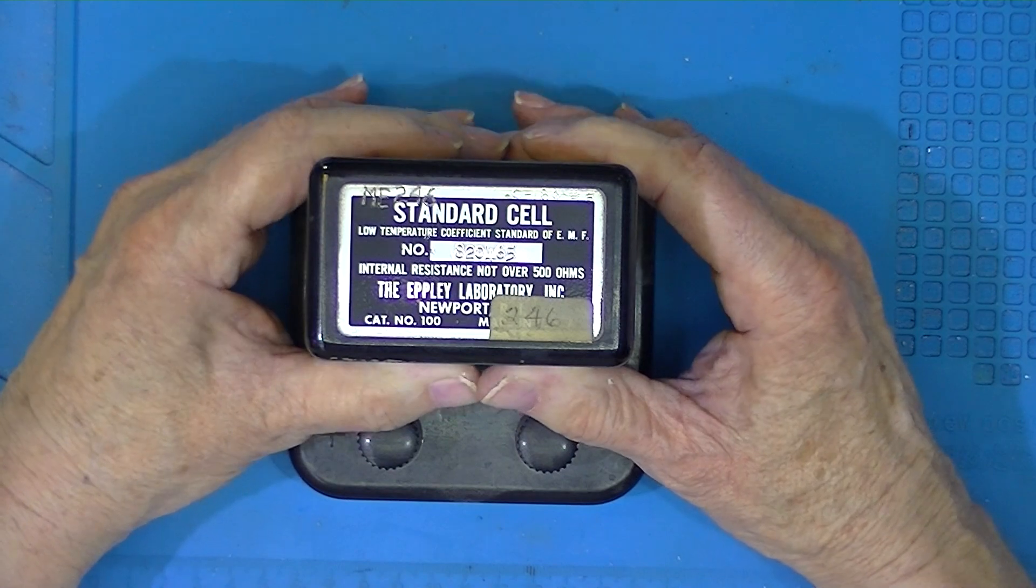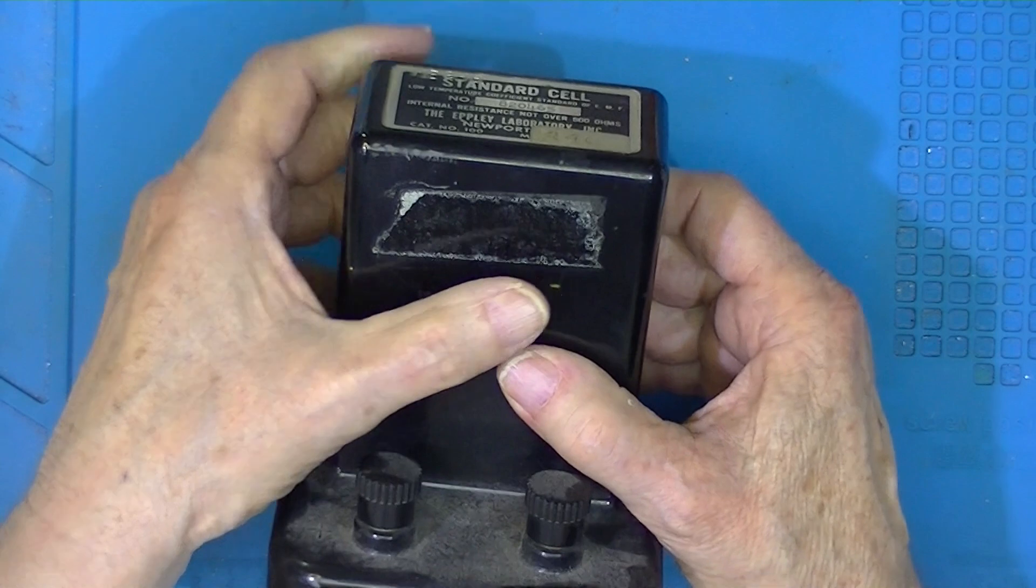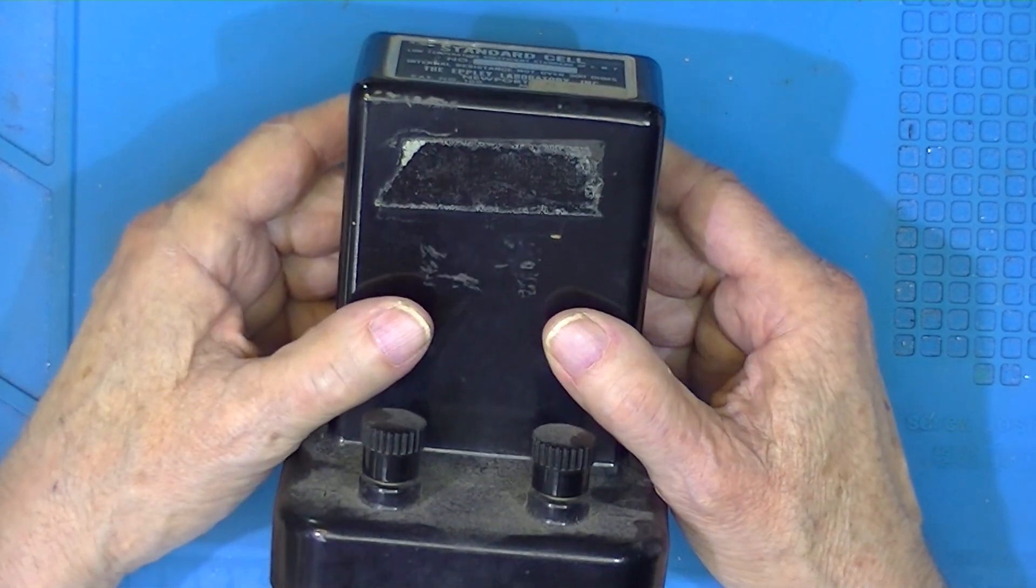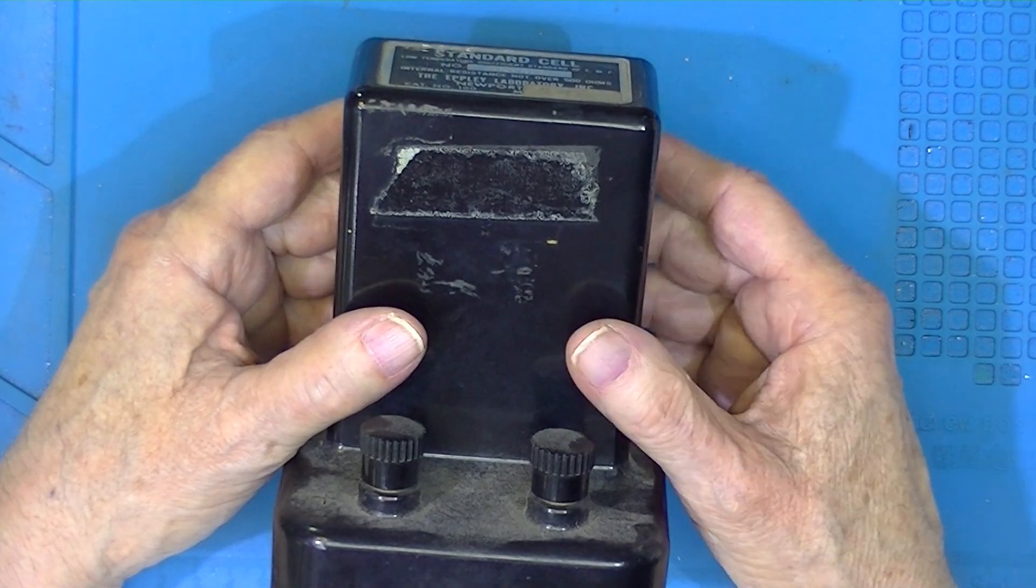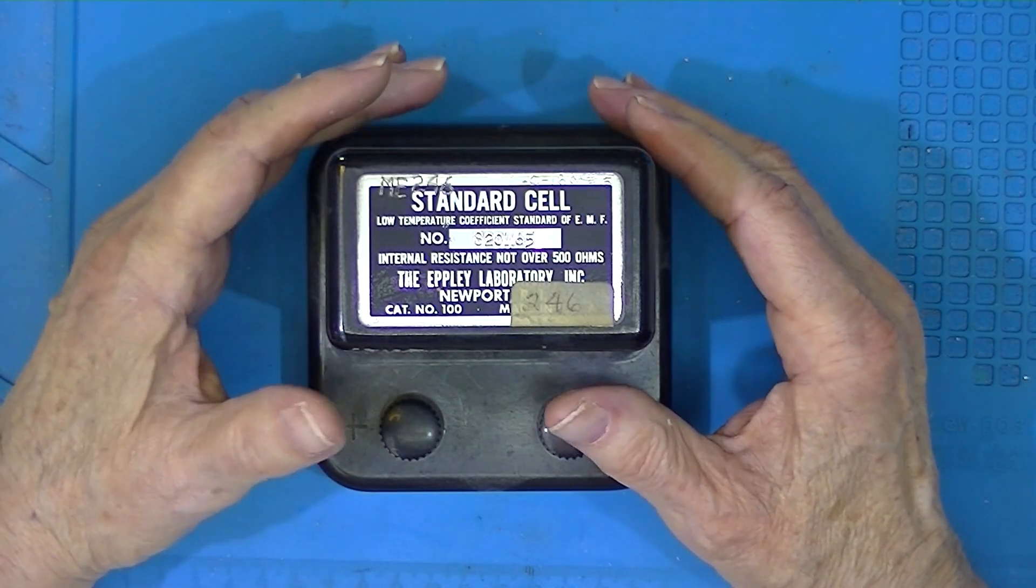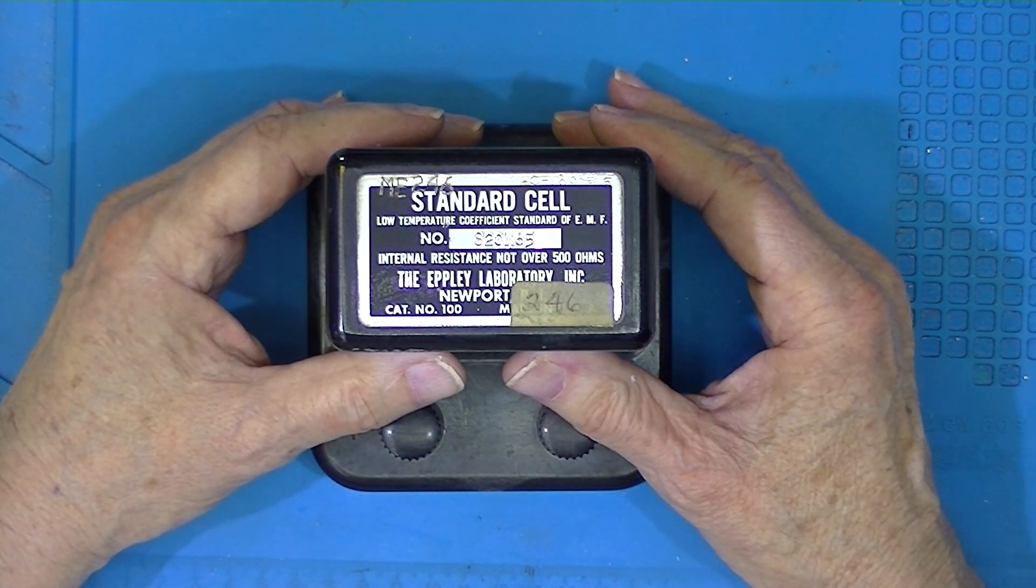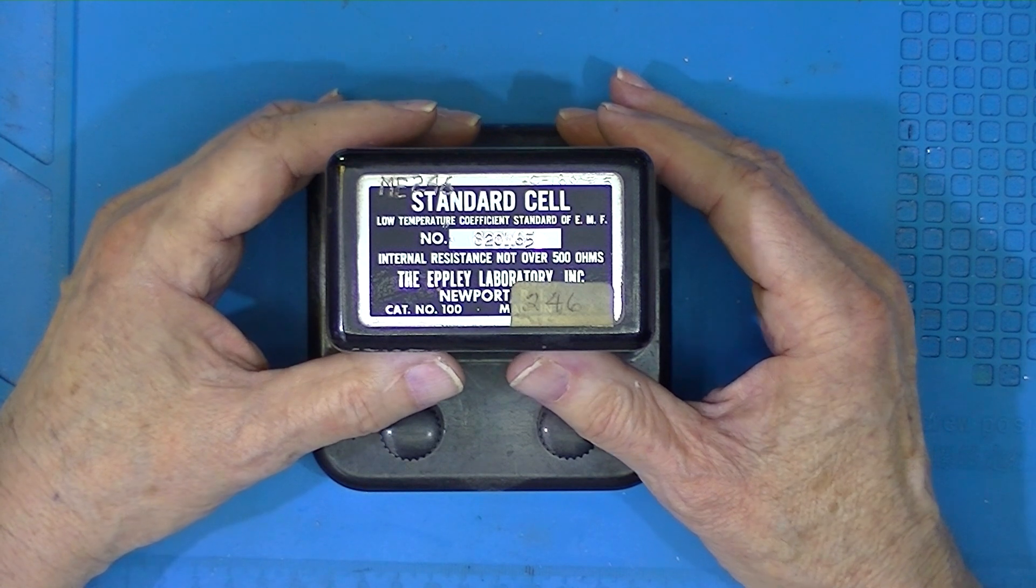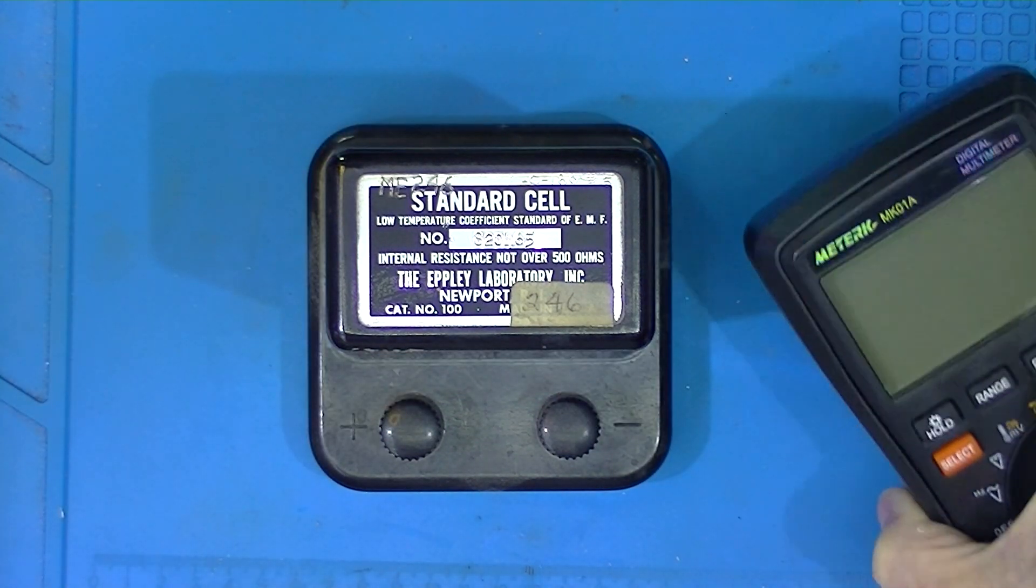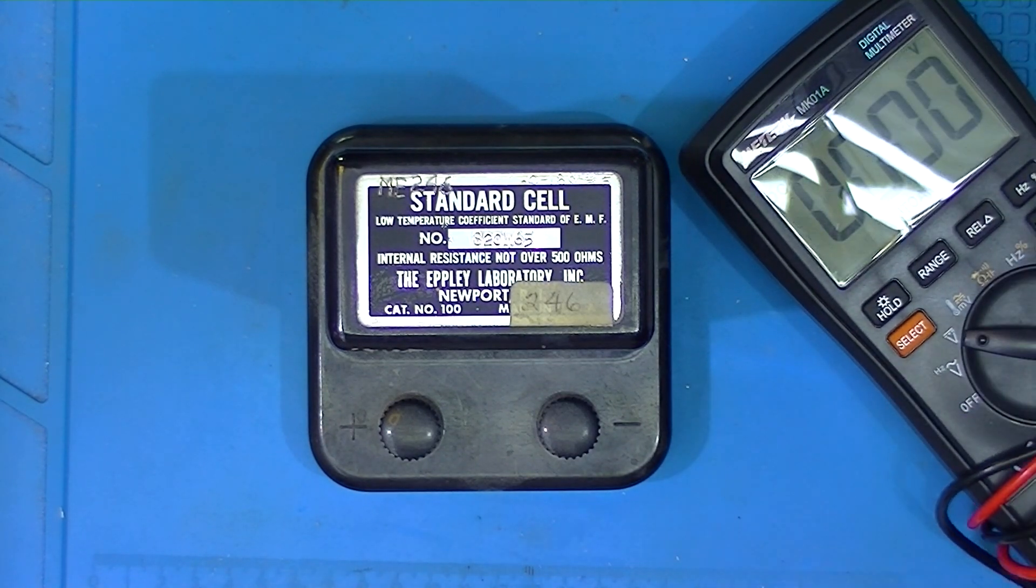This one was last calibrated—there was a handwritten piece of tape on here that said I believe '76. The cell was capable of being measured or providing accuracies to five decimal places. I don't even know if this cell is capable of producing a voltage anymore.